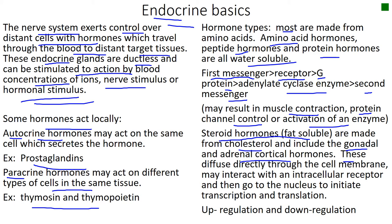Steroid hormones may diffuse directly through the cell membrane, which is a phospholipid bilayer. Remember that like dissolves like — if it is a fatty membrane, then it easily dissolves fatty hormones. These hormones may interact with an intracellular receptor, then go to the nucleus to initiate transcription, or copying of the DNA, and translation — making a protein from that copy.